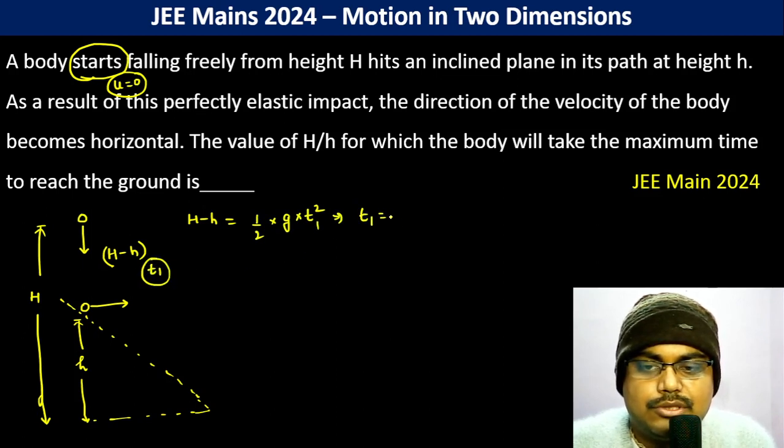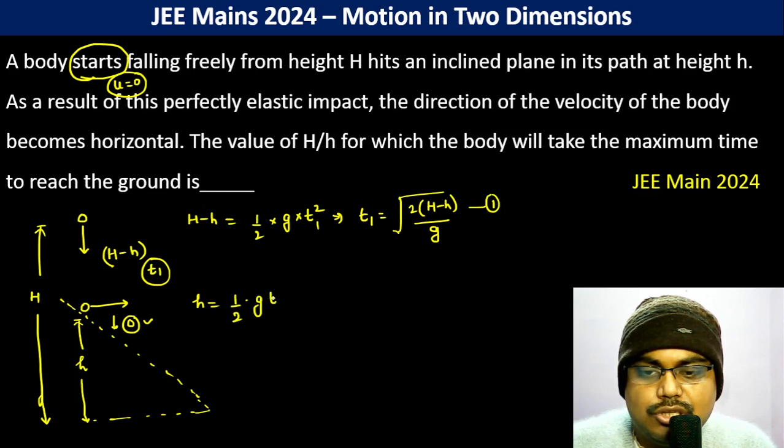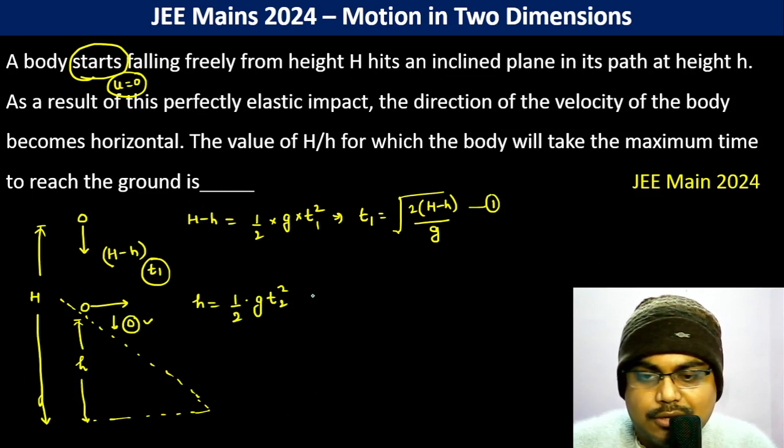Now after this, when it's here, the y directional velocity is again zero. So h is equal to half G T2 square.